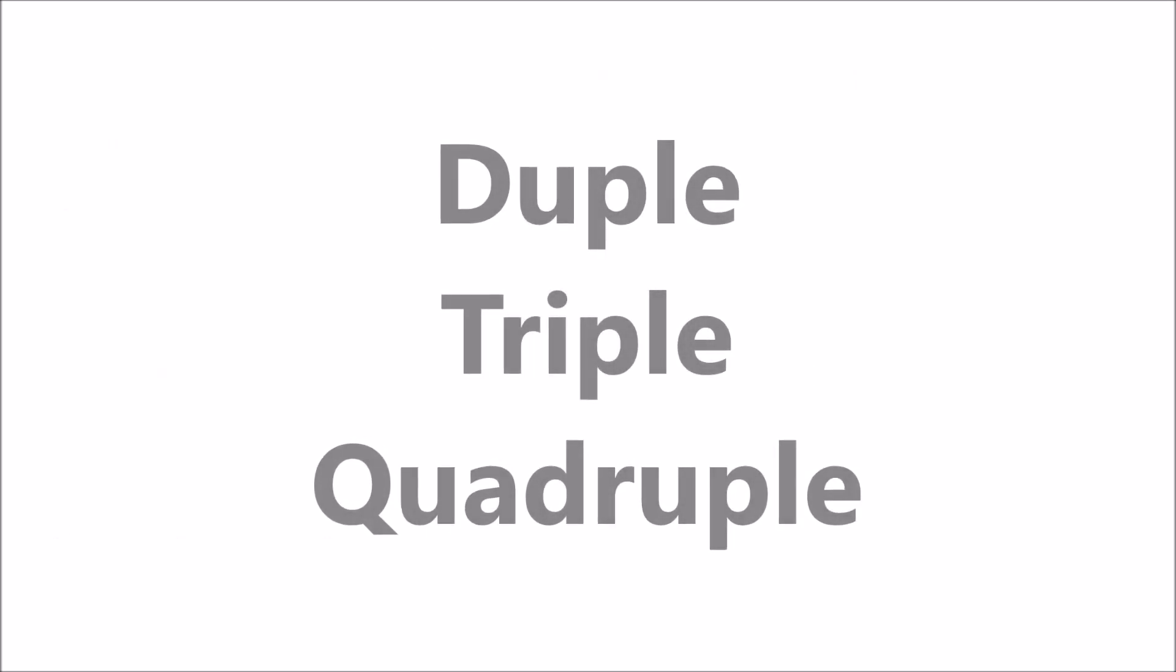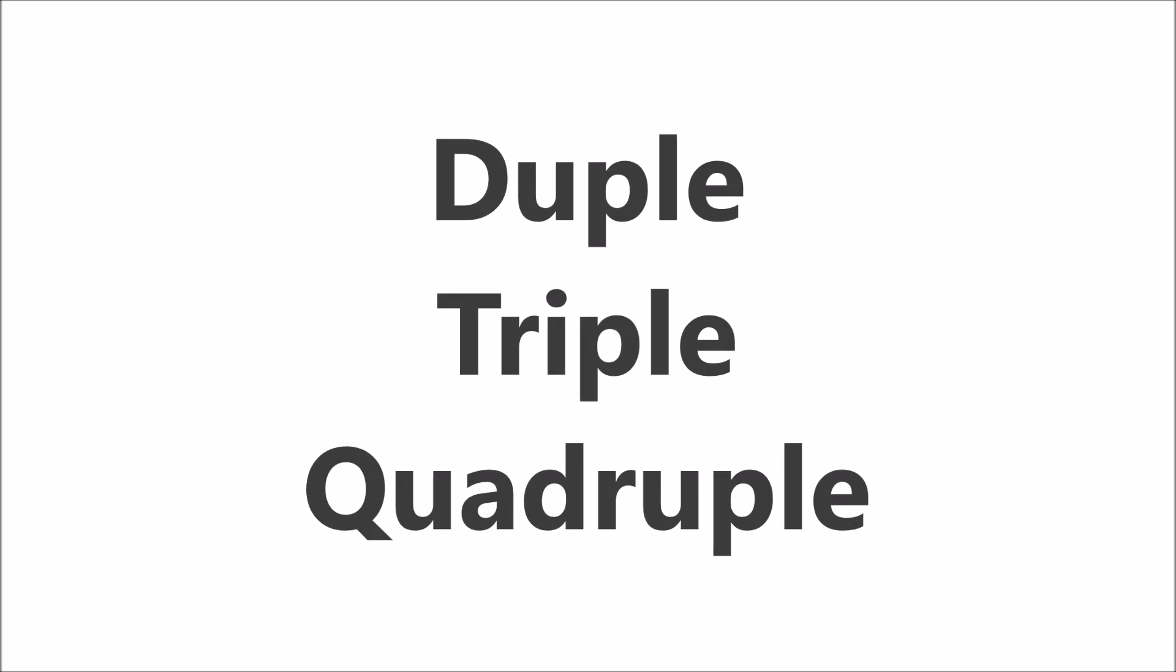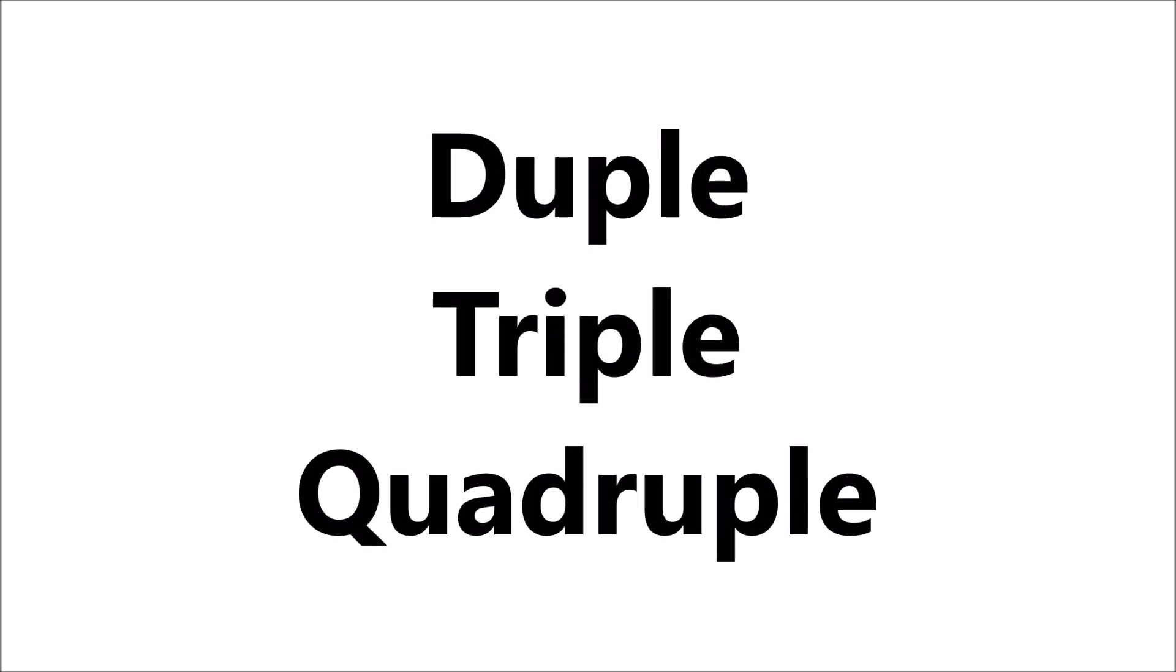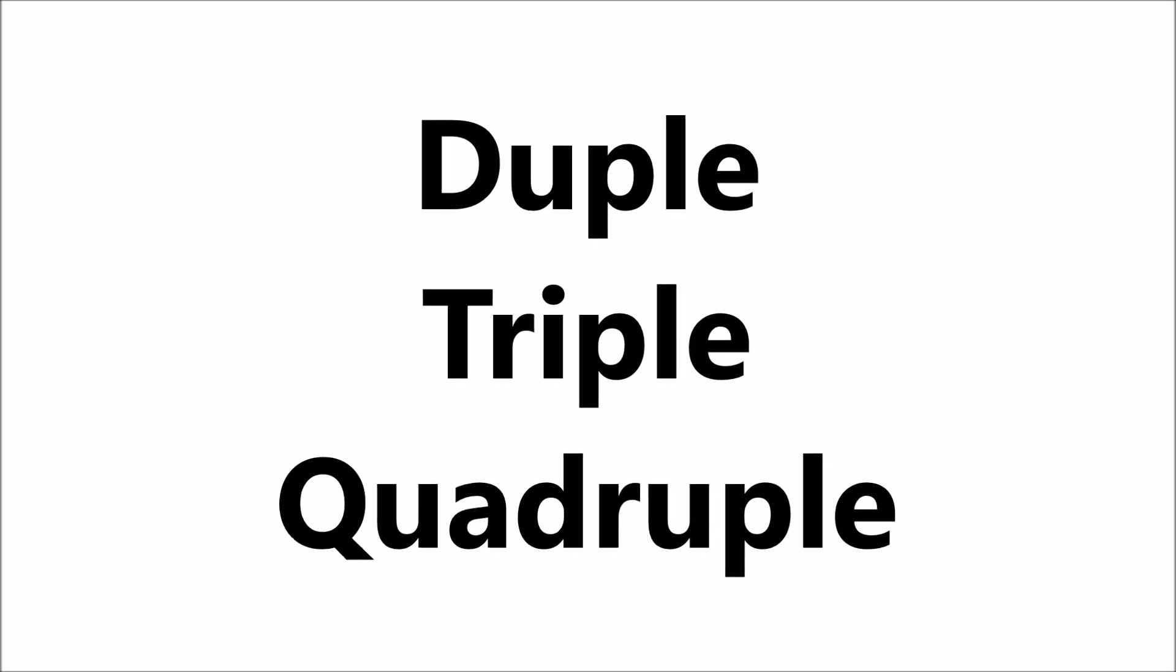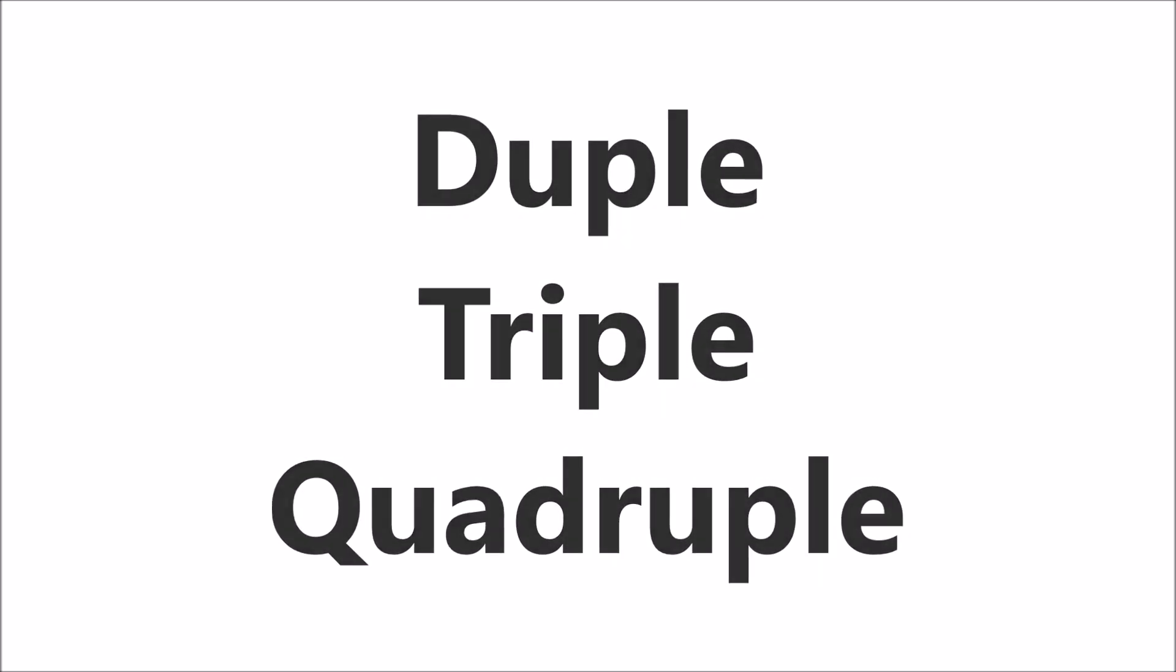There are three more words that you should also learn: Duple, triple, and quadruple. Their meanings are quite obvious. Duple means two beats in a bar, triple means three beats in a bar, and quadruple means four beats in a bar.